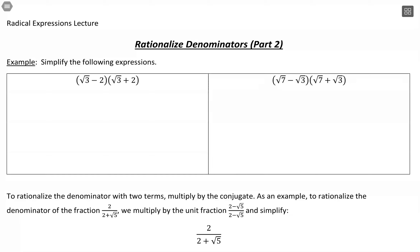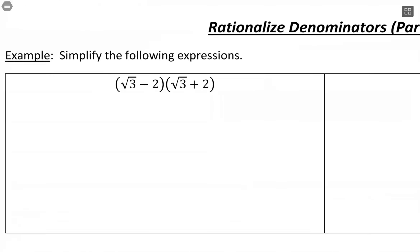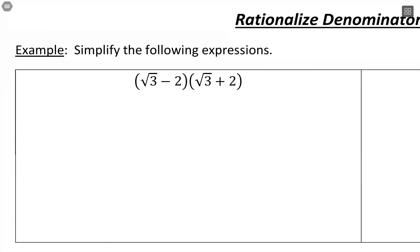Before we start rationalizing denominators with multiple terms, let's look at what happens with multiplication. What I want us to notice with these multiplications is we have the same terms at the beginning and end — square root of 3, square root of 3, 2, and 2 — and then subtraction and addition, so different signs between them. We've seen this before. This is our difference of squares, but I want to go through it the long way of FOILing so you can really see how everything works out.